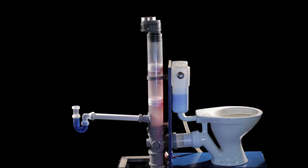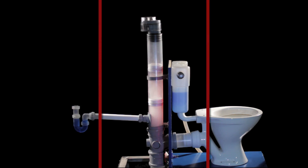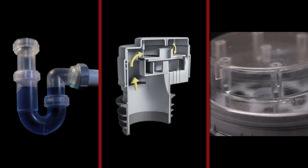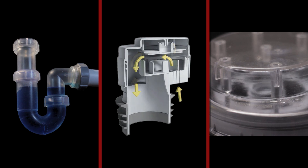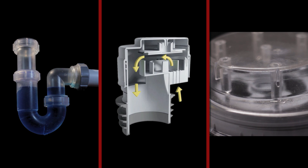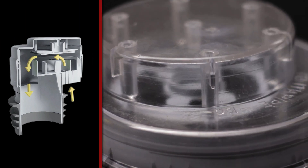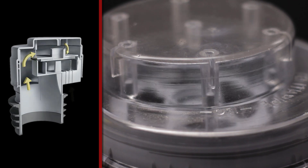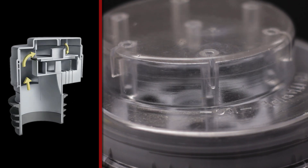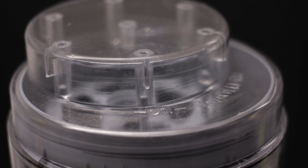When the pressures equalise, the valve closes again. The AAV houses a moving diaphragm. The diaphragm stays closed under neutral and positive pressure. During a discharge, the negative pressure within the piping system lifts the diaphragm to allow air into the system. The internal and external pressures then equalise and the diaphragm closes by gravity. The diaphragm will remain closed during positive and neutral pressure, which will keep foul air within the system.